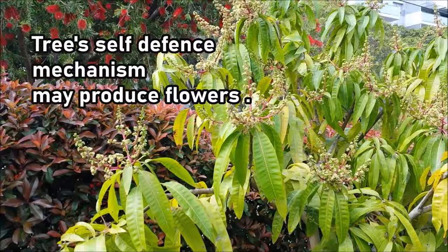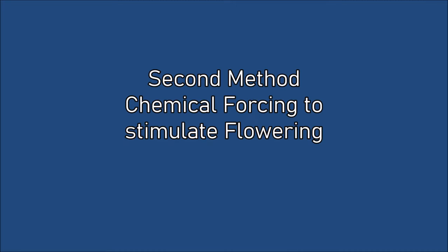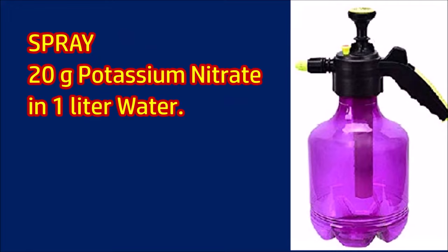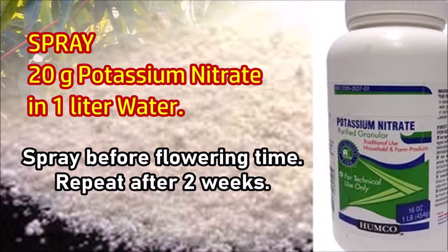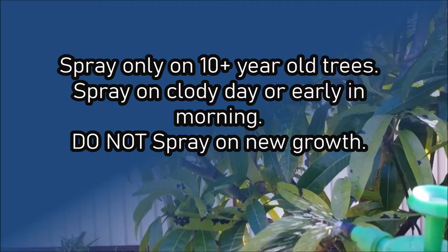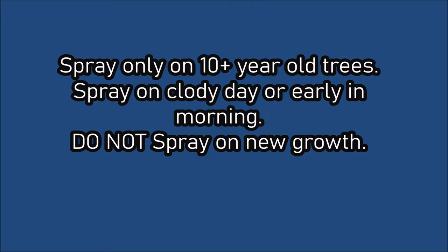The second method is chemical forcing to stimulate flowering. Spray a solution of potassium nitrate on the leaves before flowering time, and repeat after 2 weeks. Spray only on trees over 10 years old. Spray on a cloudy day or early in the morning. Do not spray on new growth.